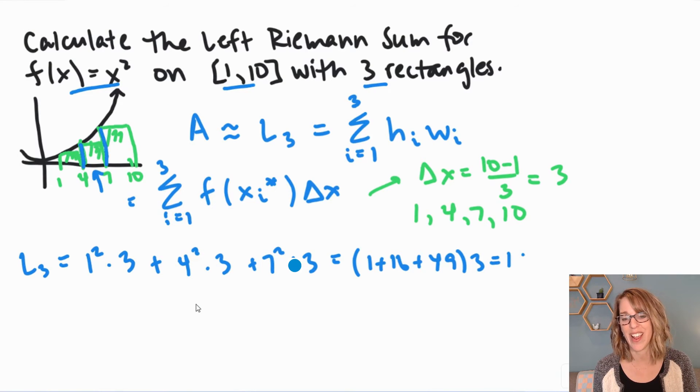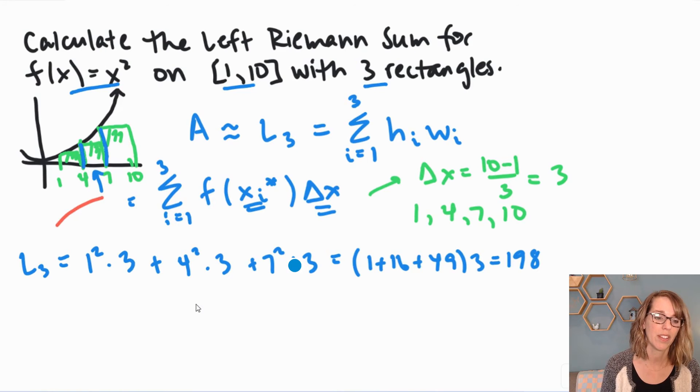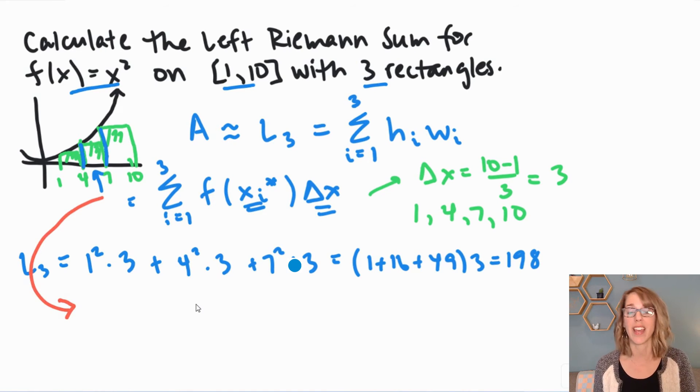So I'm approximating that area with an area of 198. I can also put this into the summation using the values that I've got for my sample point. So if I continue with my setup, I still want i equals 1 to 3. F of x sub i, so that's going to be my function squared times delta x. I already have delta x. Delta x is 3.